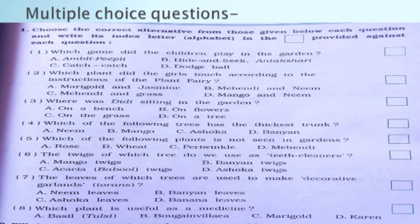Third question: where was didi sitting in the garden? Options are: on a branch, on flowers, on the grass, on a tree.